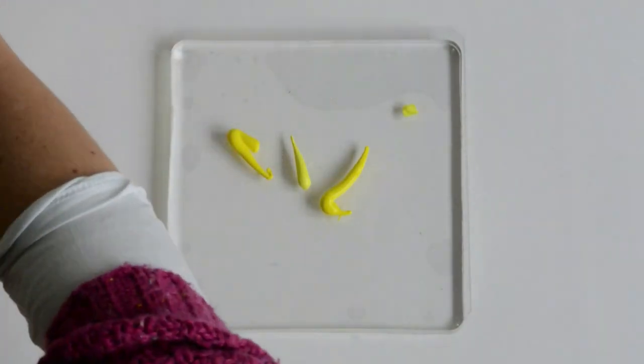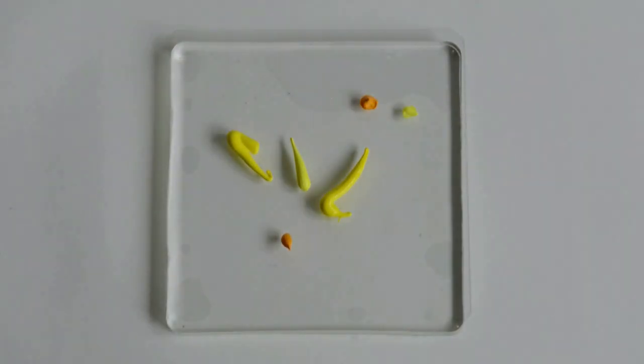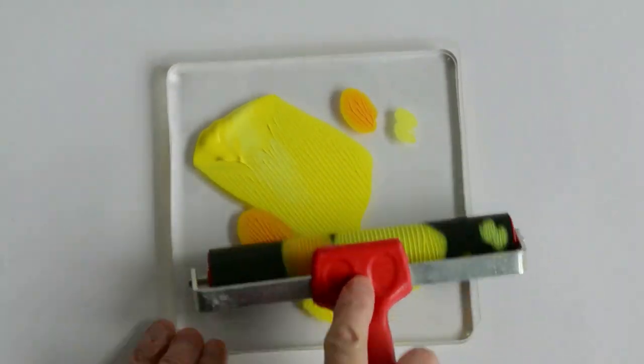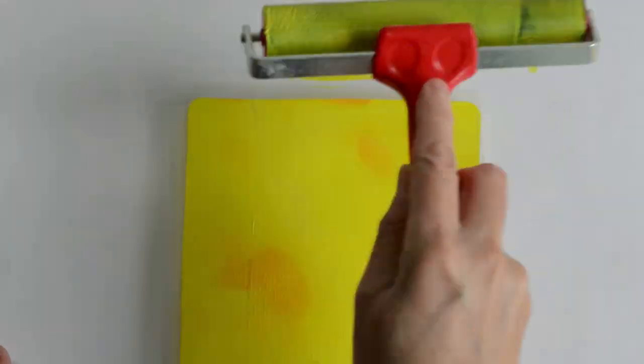I'm just using a couple of different yellows here which I'm going to spread out with a roller, so you're aiming for a nice even layer of paint across your plate.